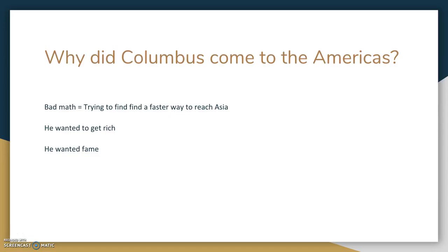Everybody at the time knew the Earth was round, and they thought it was basically as big as it is. But Columbus, being egotistical, thought that his math worked out so that the Earth was roughly 18,000 miles — a few thousand miles smaller in diameter.